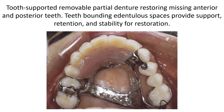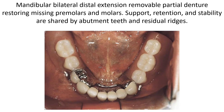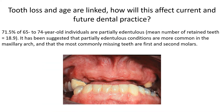A tooth-supported removable partial denture restores missing anterior and posterior teeth; teeth bounding the edentulous spaces provide support, retention, and stability for the restoration. A mandibular bilateral distal extension removable partial denture restores missing premolars and molars, with support, retention, and stability shared by abutment teeth and residual ridges.